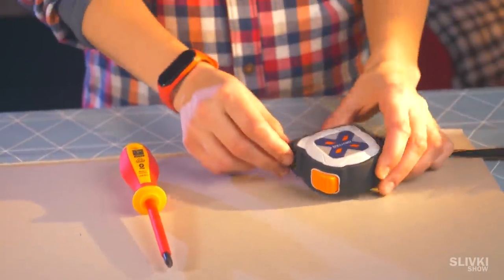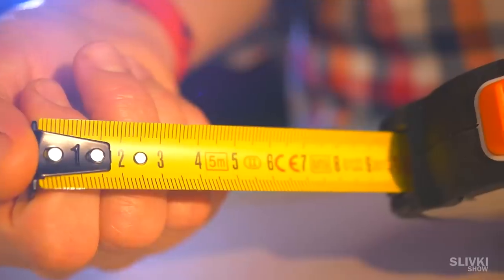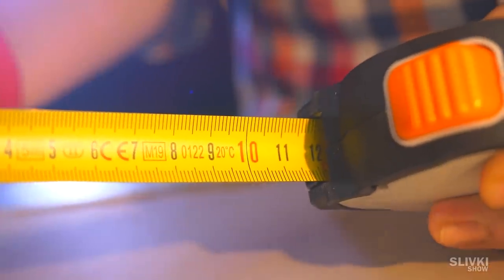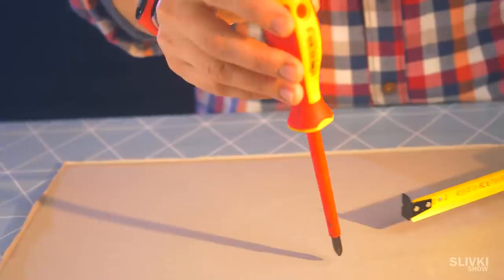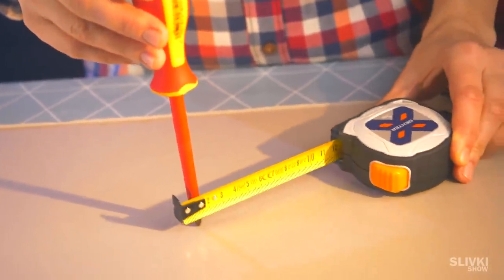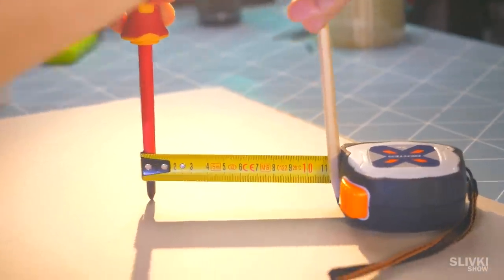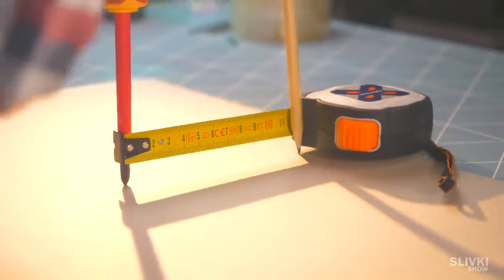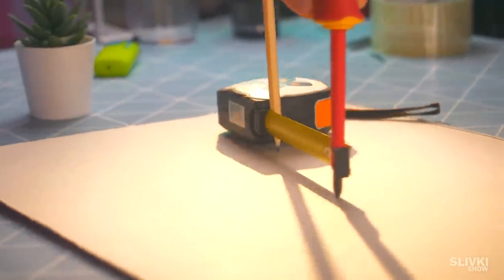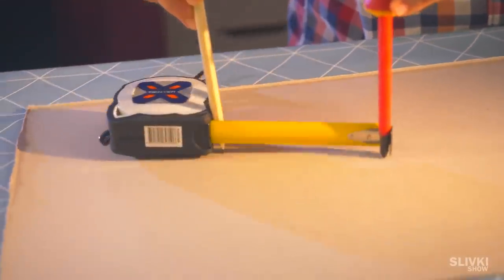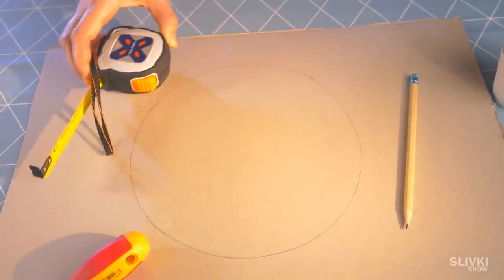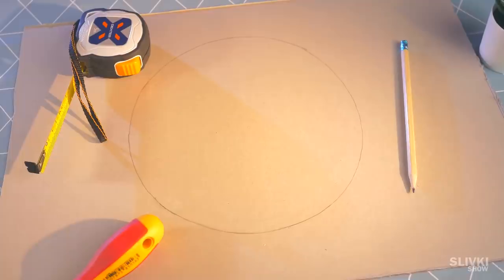Here we have an ordinary screwdriver and tape measure. We need to set the diameter of the circle in the tape measure and add about a centimeter for the thickness of the screwdriver and pencil. Then we place the screwdriver in the center and, holding the pencil against the body of the tape, draw the circle we want.